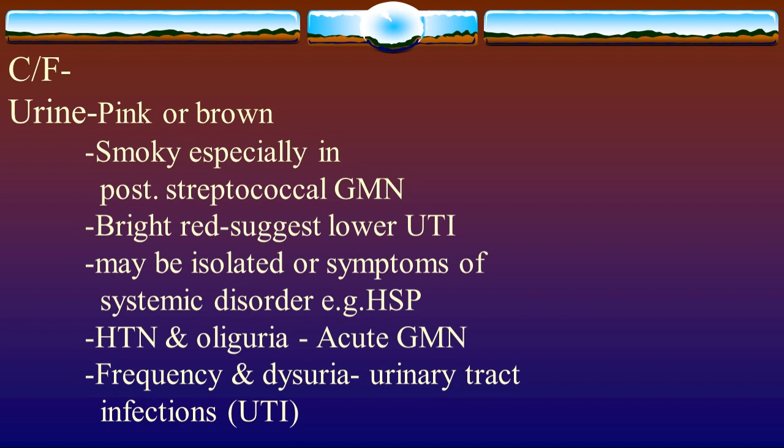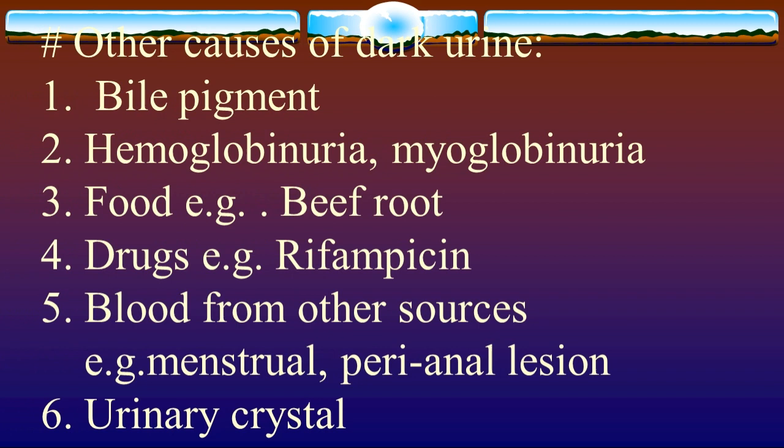Urine that appears pink, brown, or smoky is especially associated with post-streptococcal glomerulonephritis. Bright red urine suggests a lower urinary tract source. Associated features include hypertension, oliguria, frequency, and dysuria indicating urinary tract infection.